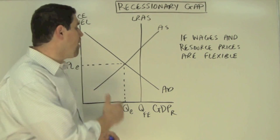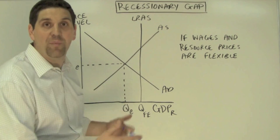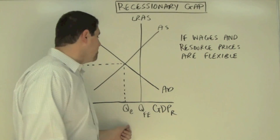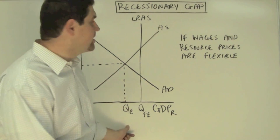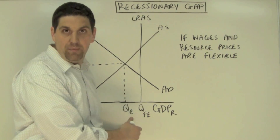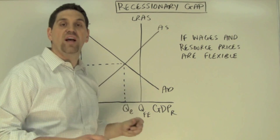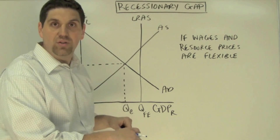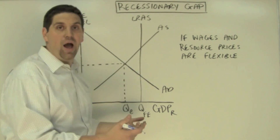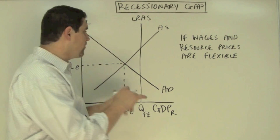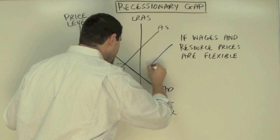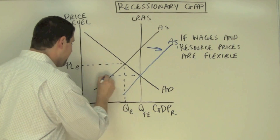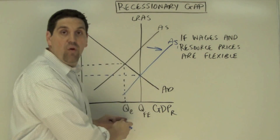Classical economists prefer that market forces deal with this issue because the government will just screw things up. If we have a recessionary gap with high unemployment, how might market forces get us back to a new long-run equilibrium? Well, if wages and resource prices are flexible, eventually workers will accept lower wages — they'd rather have a job than no job — so prices and wages would fall, causing aggregate supply to shift to the right. When that happens, price level will fall and we get back to full employment.